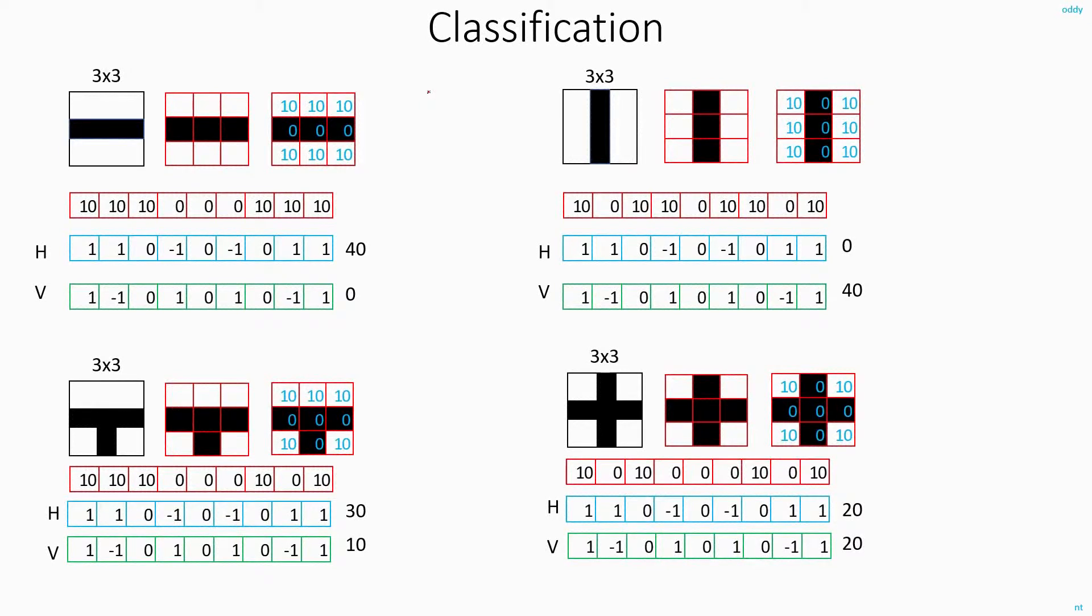Now to understand how to do classification using the fully connected layers, let me give you a very simple example. Let's say I want to take a small patch of an image and identify whether it has a horizontal line or a vertical line. This I want to do using the fully connected layers.